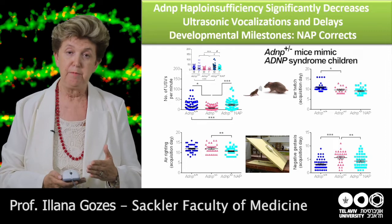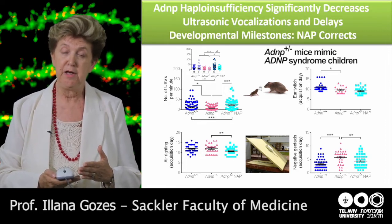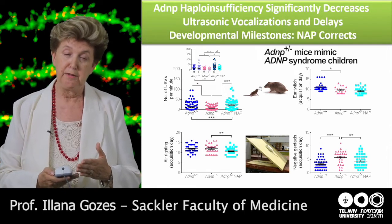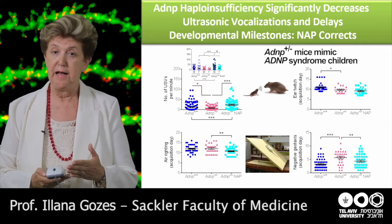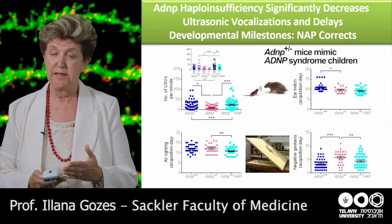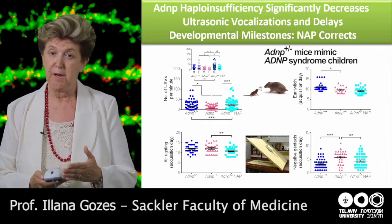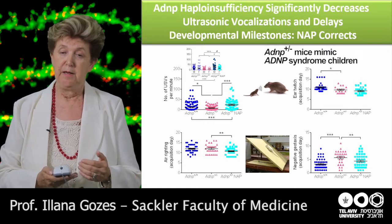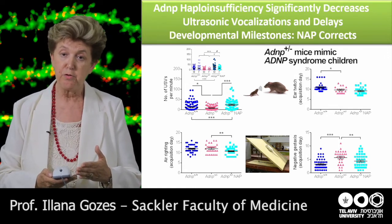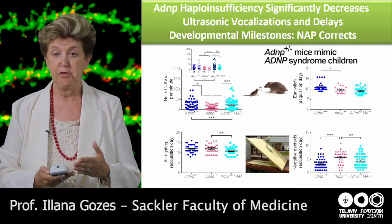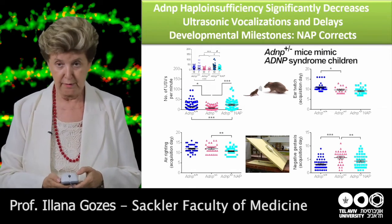What we saw, for example, was vocalization. ADNP children can be delayed in language acquisition and some unfortunately don't speak. When we looked at the mice, they were also delayed in vocalization — they had less vocalization. When treated with NAPVSIPQ, we enhanced these haploinsufficient mice and normalized them to a degree. Similarly, some developmental milestones were also inhibited. Most significantly, negative geotaxis was slower in development, and when we treated with NAPVSIPQ, we corrected it.